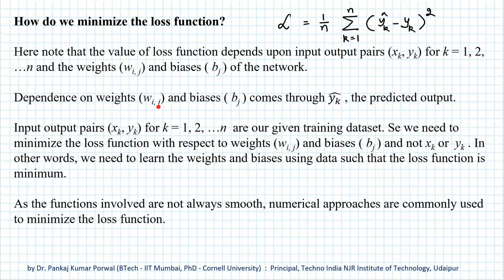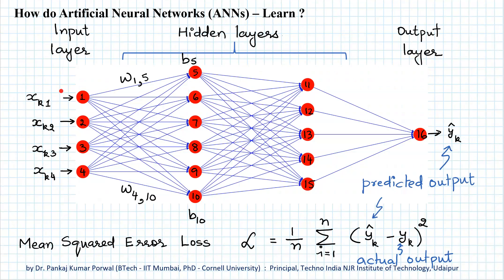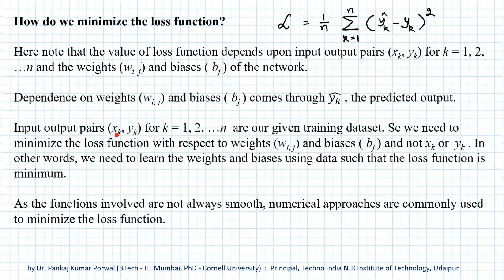The dependence of the loss function on weights and biases comes through the predicted output, because the predicted output is obtained by combination of input, weights, and biases. Since the input-output pairs are part of the given training dataset, they should not change during learning — we treat them as constant. So we need to minimize the loss function with respect to weights and biases only.